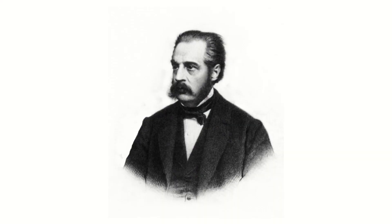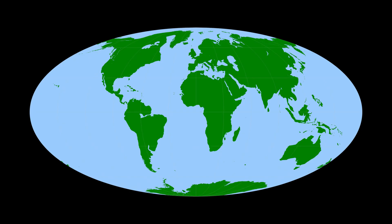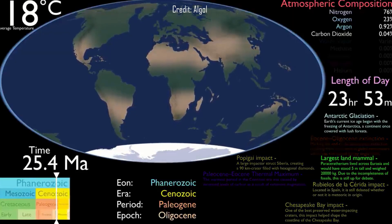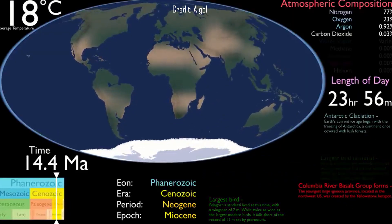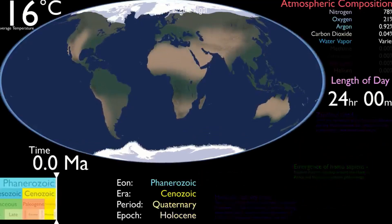The Neogene was first defined in 1853 by Austrian paleontologist Moritz Horns, and differentiated from the Quaternary by the ICS in 2009, having lasted from 23.03 million years ago right up until 2.588 million years ago. At this point, the continents were almost exactly where they are today. An exception is that sea levels fell, causing land connections between Eurasia, Africa and North America. South America had also shifted closer to North America, connecting the two landmasses and having profound effects on the life there.